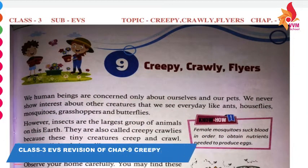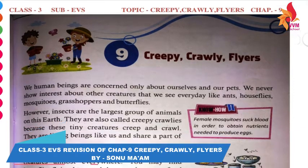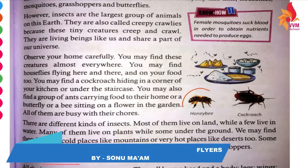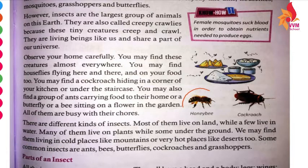Hello, good morning students. Today we are going to revise our chapter 'Creepy Crawlies and Flyers' — animals that are creepy, crawly, or flyers. This type of animals includes mosquitoes that are flying, insects that are flying or crawling, like honeybees. We know that there are insects in our earth, and there are more organisms and more species — insects like honeybees and cockroaches are flyers.